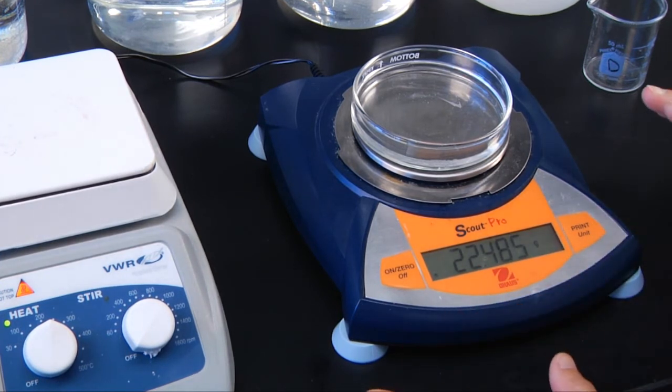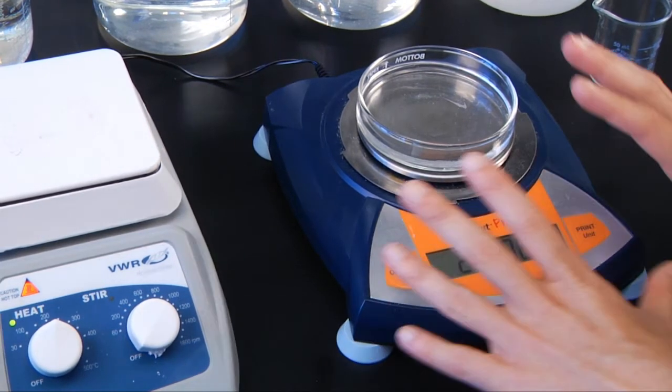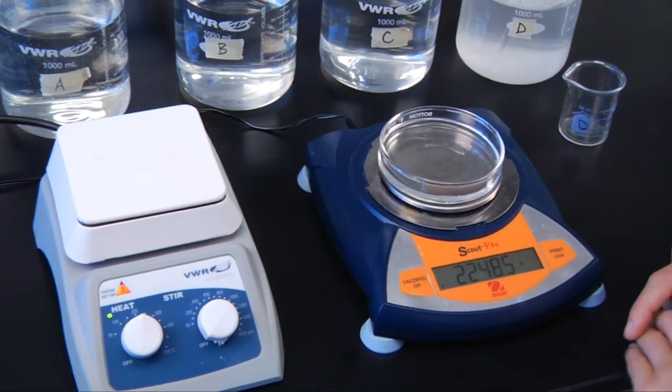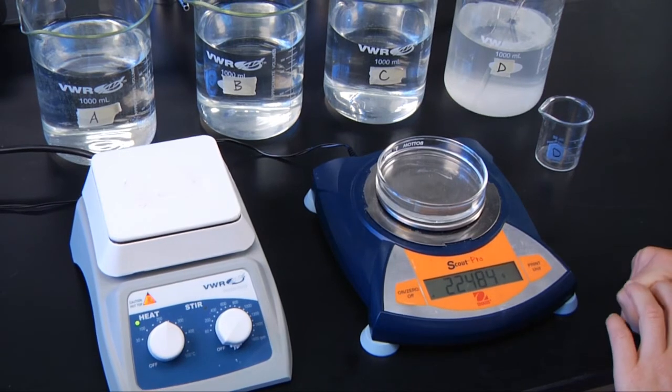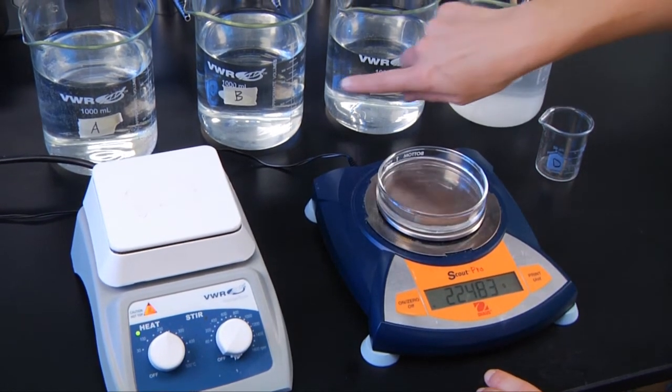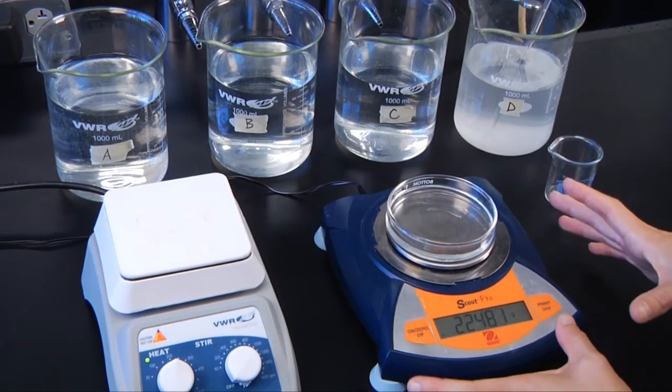So once everyone in your group has done this, seen what happens, you're going to write your salinity for your sample letter up on the chalkboard. And that way everybody in the class will get a chance to see what the calculated salinities are for each of these using this boiling method.